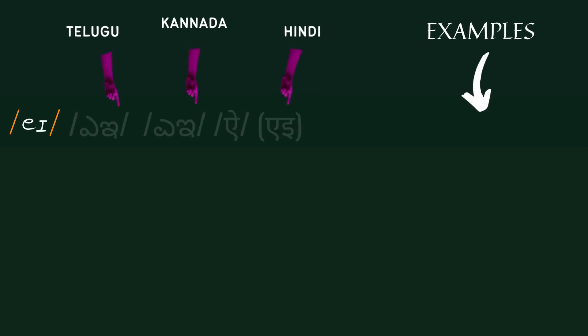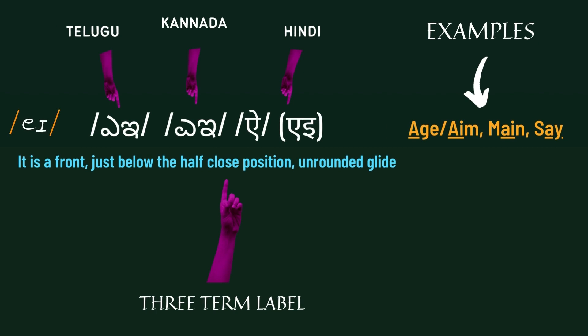The first diphthong is /eɪ/. It is a front, just below the half-close position, and rounded glide.